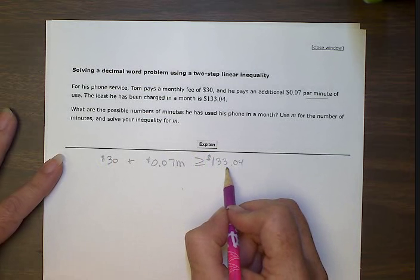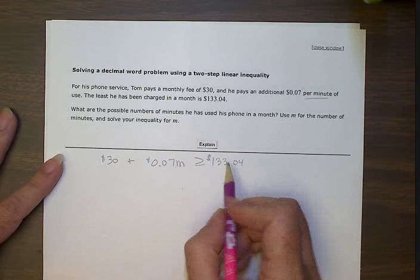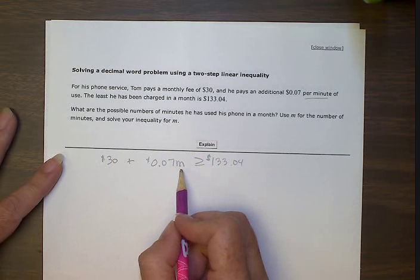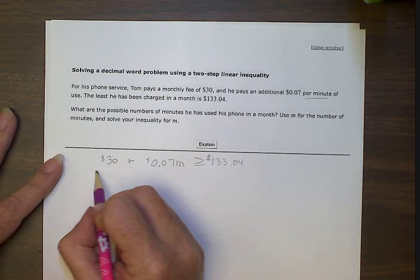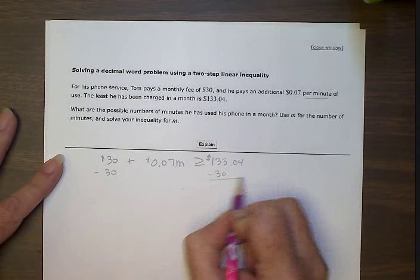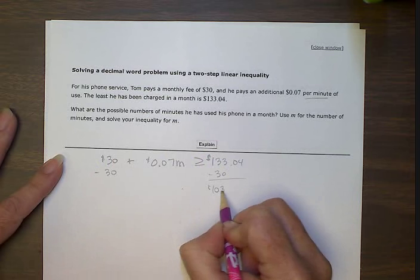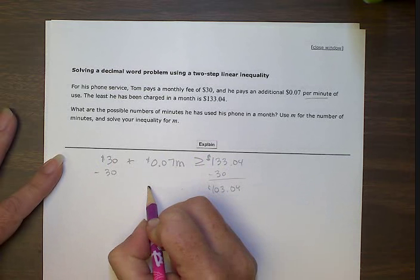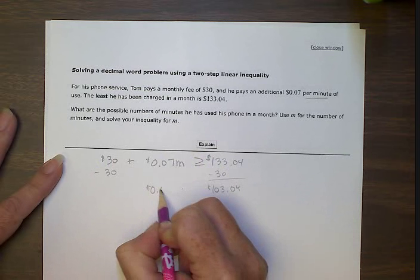So what are the possible numbers of minutes he has used his phone in a month? So we wrote down this M, now we're going to solve for M. So first we're going to subtract this $30. That gives us a total of $103.04. And then we're left over here with our $0.07 per minute.